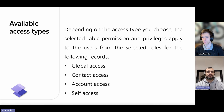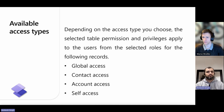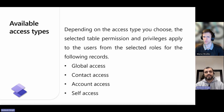The last one is self access, which applies the selected table permission and privileges to the user from the selected role for only their own contact record. Please note the parent access type is only available in the portal management app. Instead of creating a table permission with the access type of parent when using the design studio, directly add the child permission to existing table permissions.